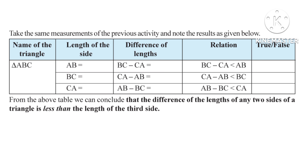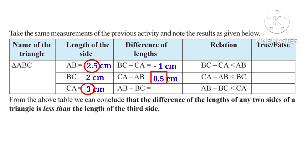Now let us take the same measurements of the previous activity. In triangle ABC, length of AB is equal to 2.5 cm, BC is equal to 2 cm, CA is equal to 3 cm. Now let us take the difference of the lengths. BC minus CA is minus 1 cm. CA minus AB gives 0.5 cm. AB minus BC is equal to 0.5 cm.